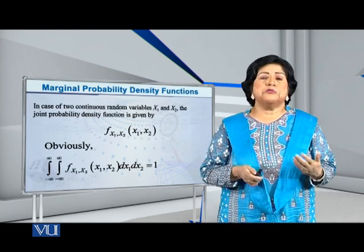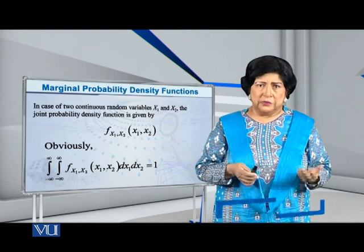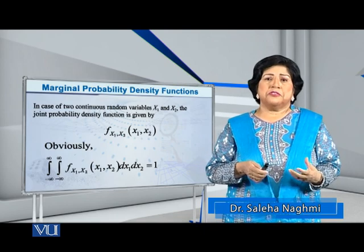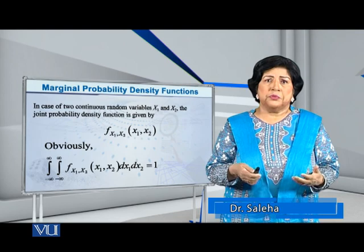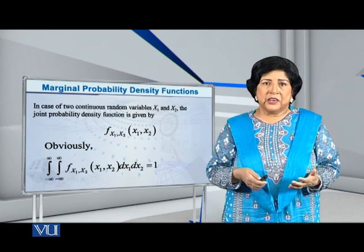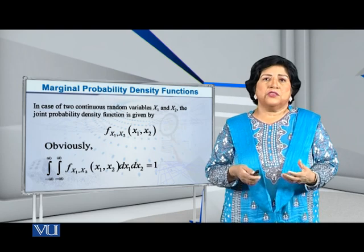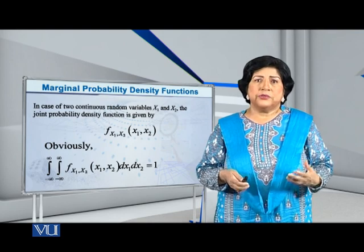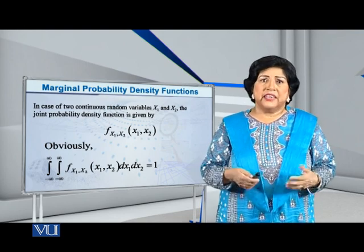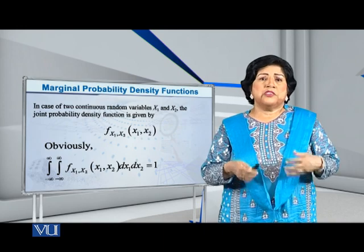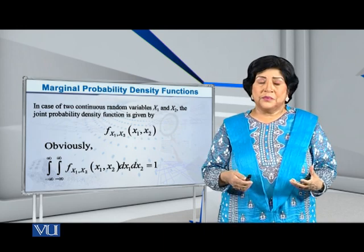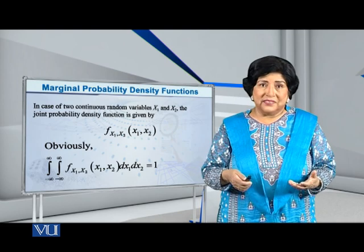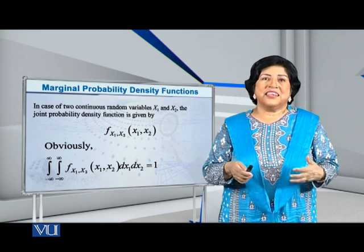First of all, if we have two continuous random variables, x1 and x2, then the joint PDF is written as small f of capital X1, capital X2 at the point small x1, small x2. And of course we will need to take the double integral of this function with respect to both x1 and x2 in order to obtain the total probability that is equal to one.